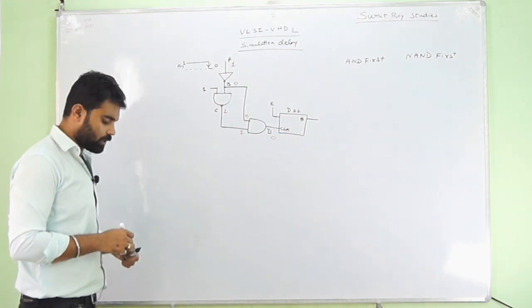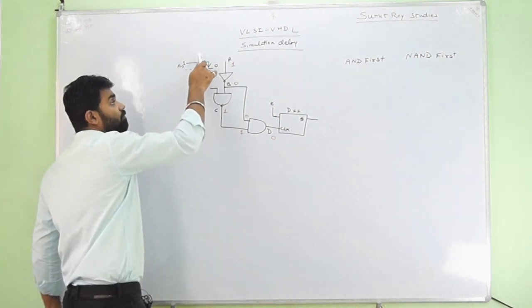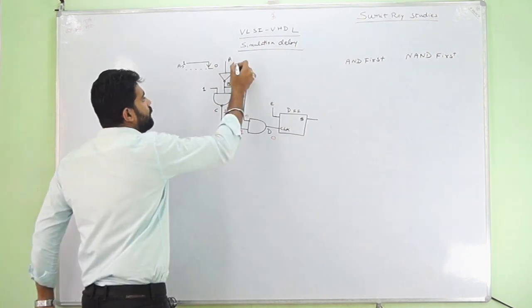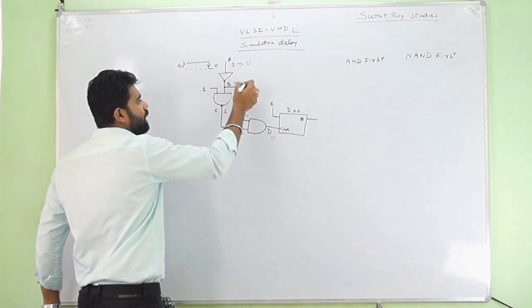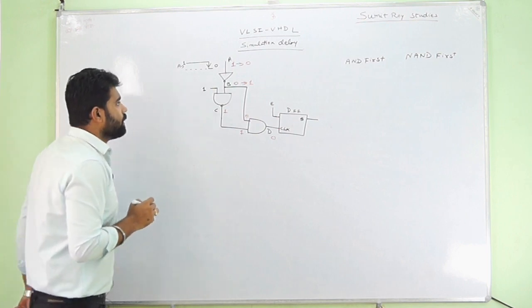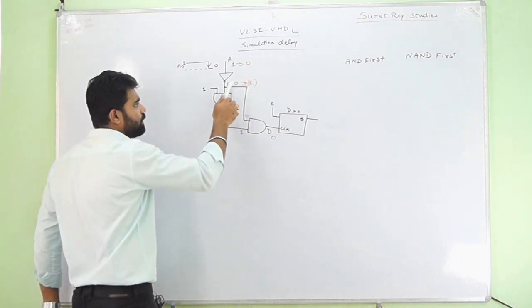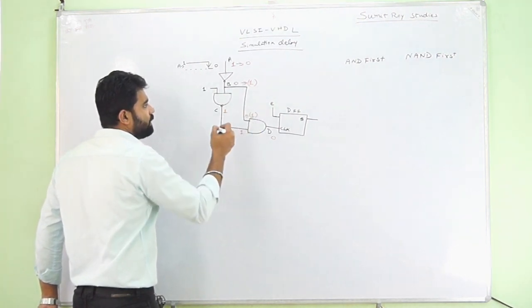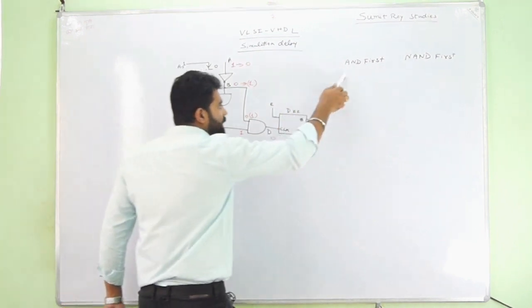Suddenly A transits from 1 to 0. So B will have a transition from 0 to 1. This new B output is now available, and it is available at both gate inputs.